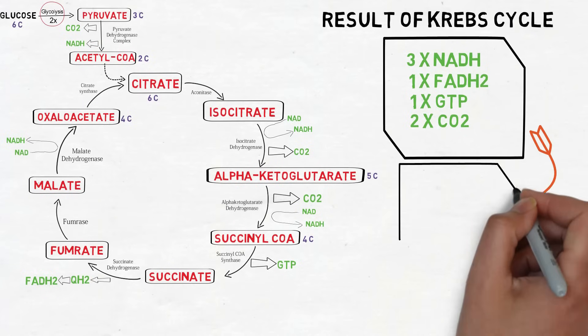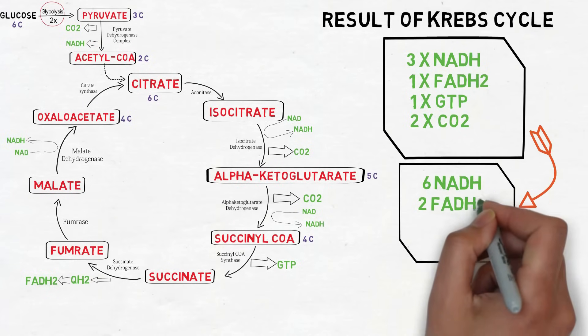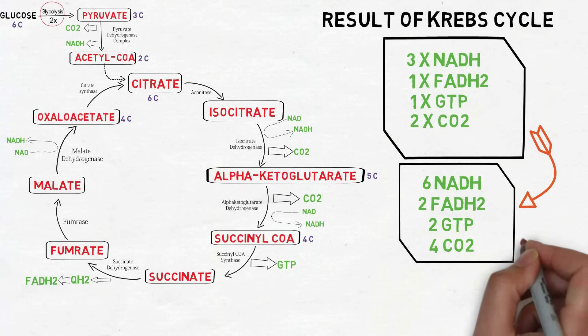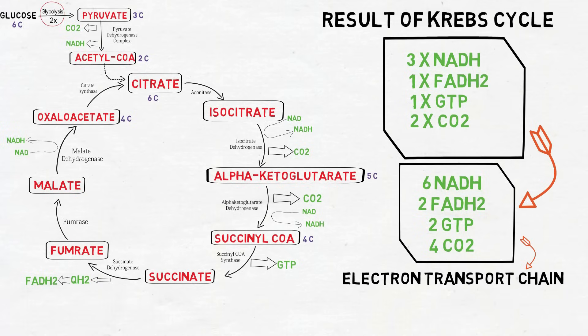Hence the products formed are six NADH, two FADH2, two GTP and four carbon dioxide. All the NADH and FADH2 are next fed to the electron transport chain for the generation of ATP.